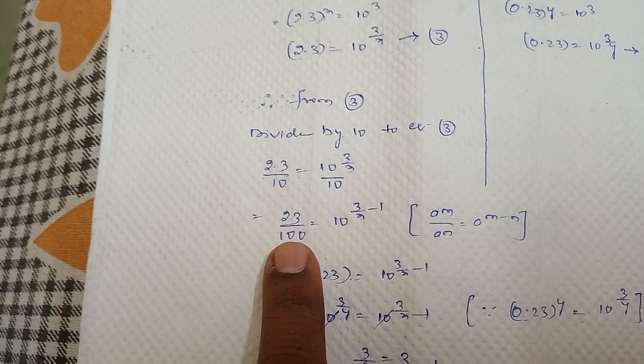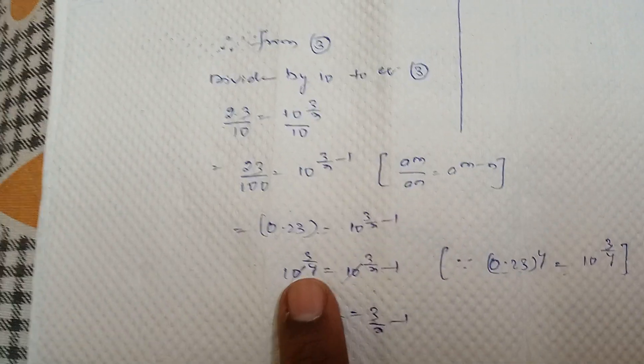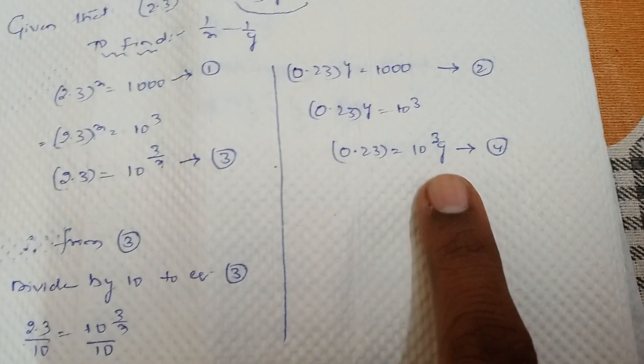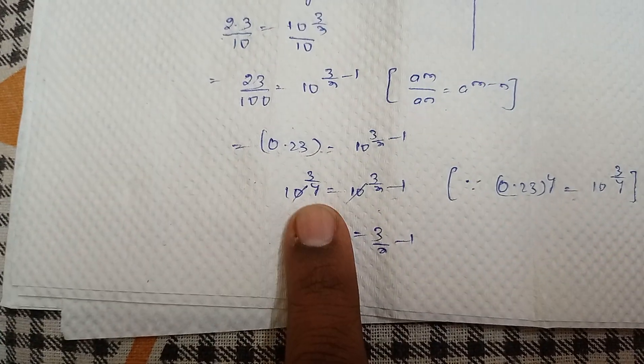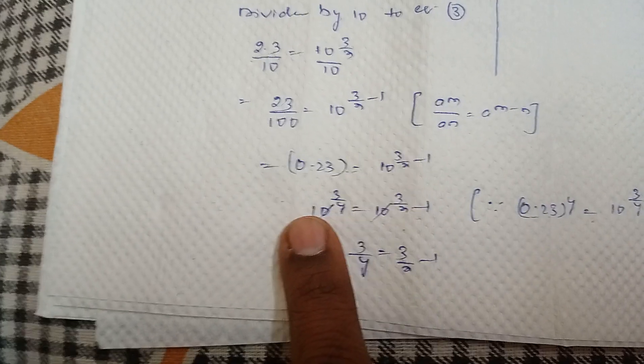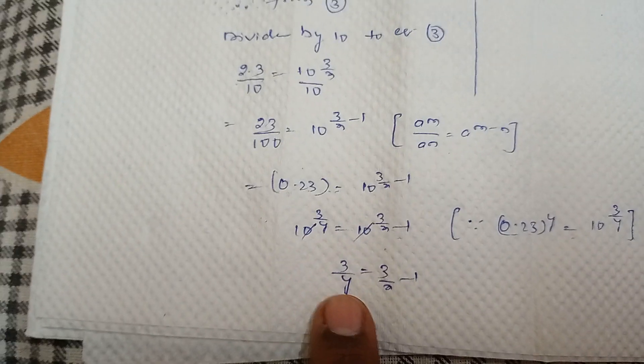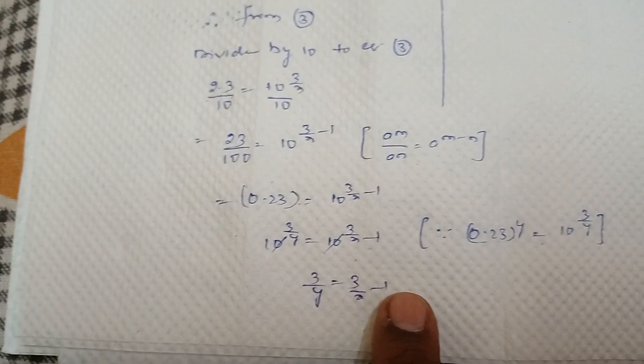Now 23 by 100 can be written as 0.23. This one same. Now 0.23 is nothing but 10 power 3 by y from equation 4. Since it is an equality condition, cancel like terms. So here base are 10. They are equal. So cancel those. So what is left out? 3 by y is equal to 3 by x minus 1.